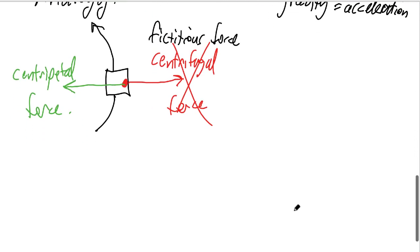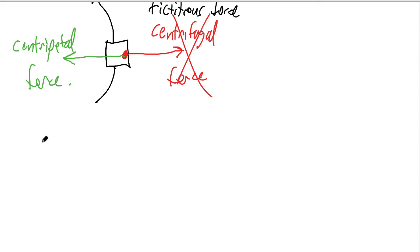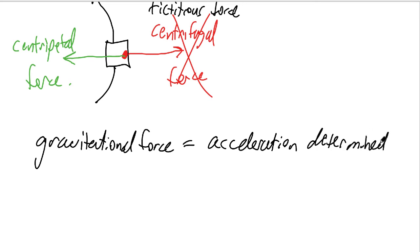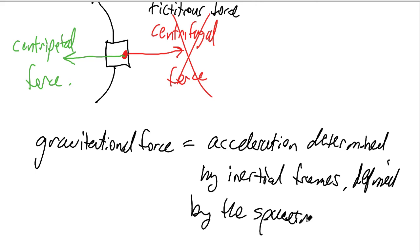We'll see all this more clearly as we develop the mathematics. To summarize, what we have in Newtonian gravity referred to as gravitational force, and what determines acceleration is the inertial frames, which are in turn defined by the spacetime geometry. And furthermore, that spacetime geometry is curved.